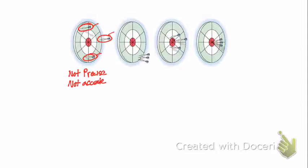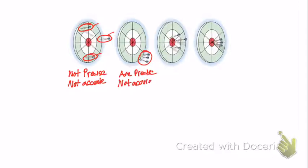The second target has three data points. Are these three data points precise? Yes — they are very grouped close together, so they are precise. However, are they accurate? No, not accurate. These data points are quite far away from our bullseye target where we're trying to get to.